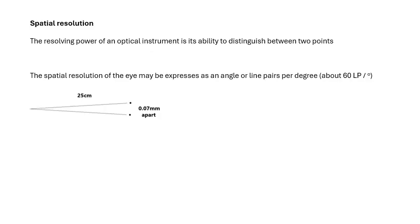Spatial resolution. The resolving power of an optical instrument is its ability to distinguish between two points. If you're looking at two stars and the angle between them is very small, you only see one star because you can't distinguish between them. Your resolving power is usually given as an angle. It's expressed as an angle or line pairs per degree, about 60 line pairs per degree you can tell them apart.